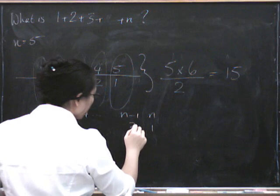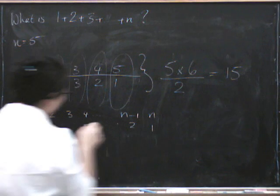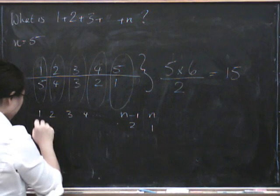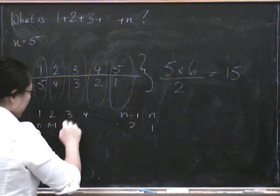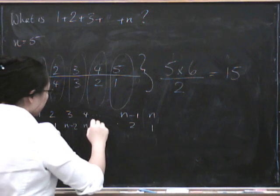We'd go 1, 2... now where are we going to get to here? Well, the last one's got to be n, hasn't it? So this one's going to be n minus 1. That's going to be n minus 2. And this one's going to be n minus 3.